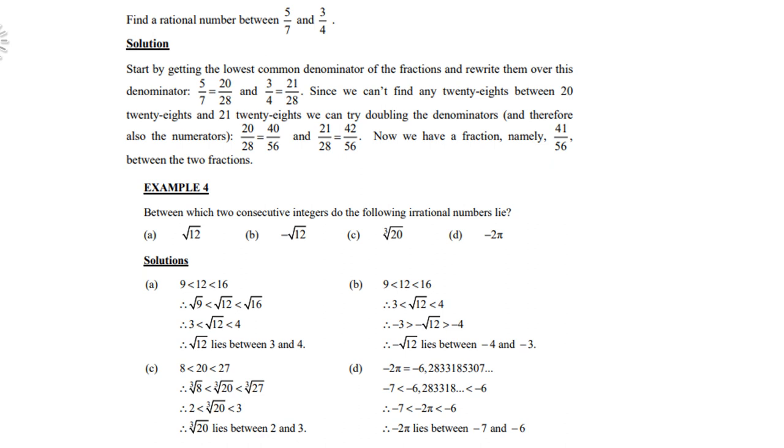Between which two consecutive integers do the following irrational numbers lie? Look at the square root of 12 for instance. Now 12 itself lies between 9 and 16. So the square root of 12 lies between the square root of 9 and the square root of 16. Take note, 9 is a rational number and 16 is a rational number. I could not choose 11 because 11 wasn't rational.